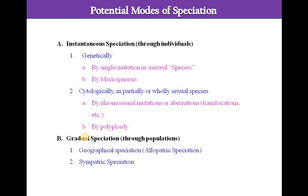Gradual speciation can occur through two ways: geographical speciation, which is called allopatric speciation, and sympatric speciation. Now we will learn these potential modes of speciation one by one, starting with instantaneous speciation.